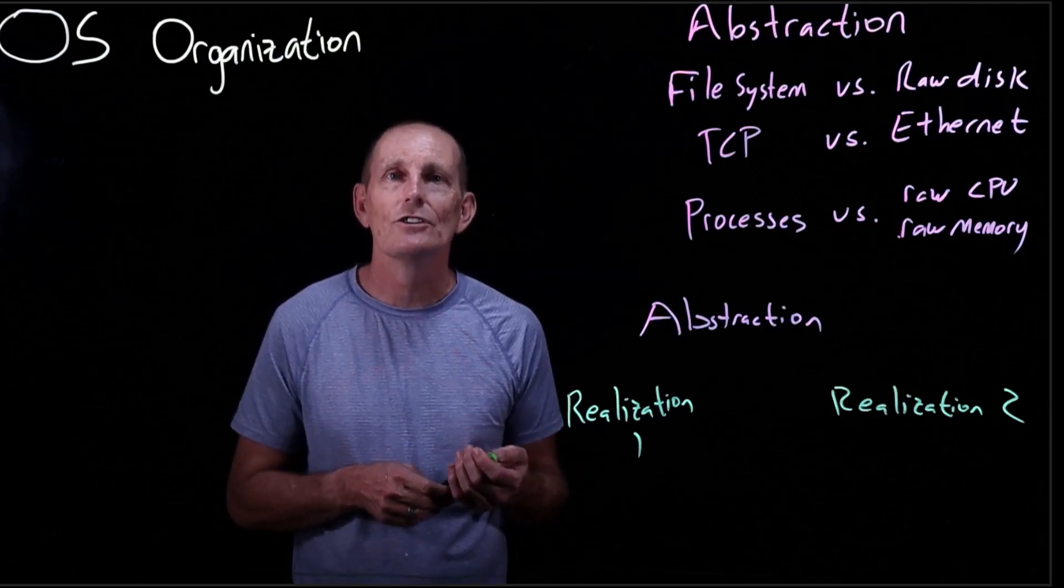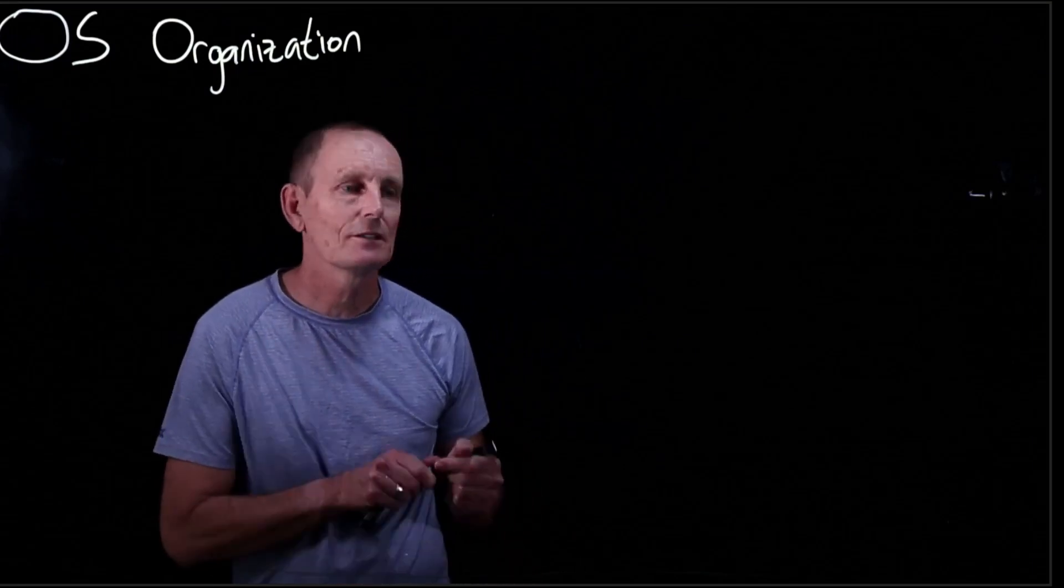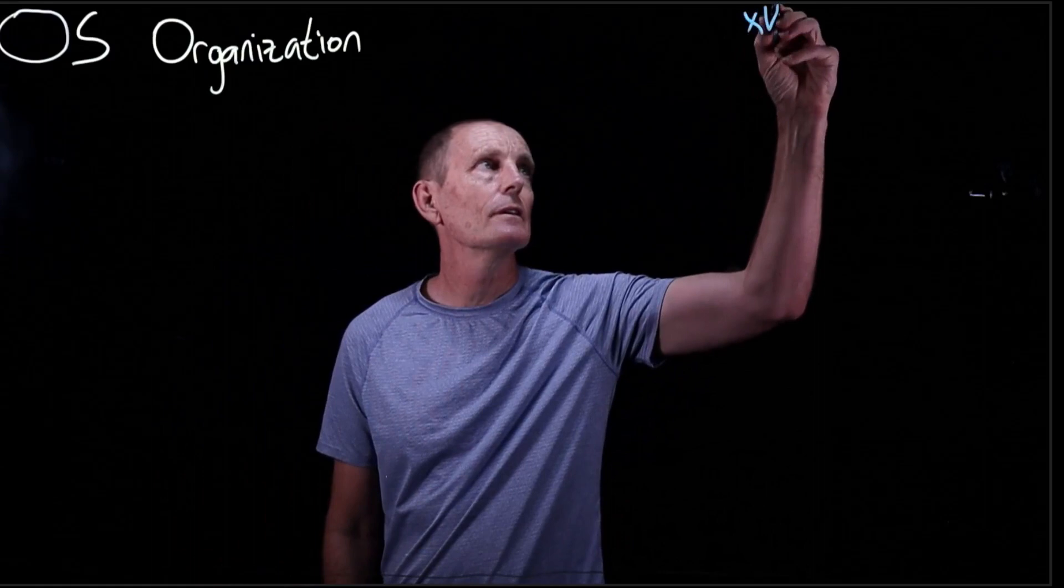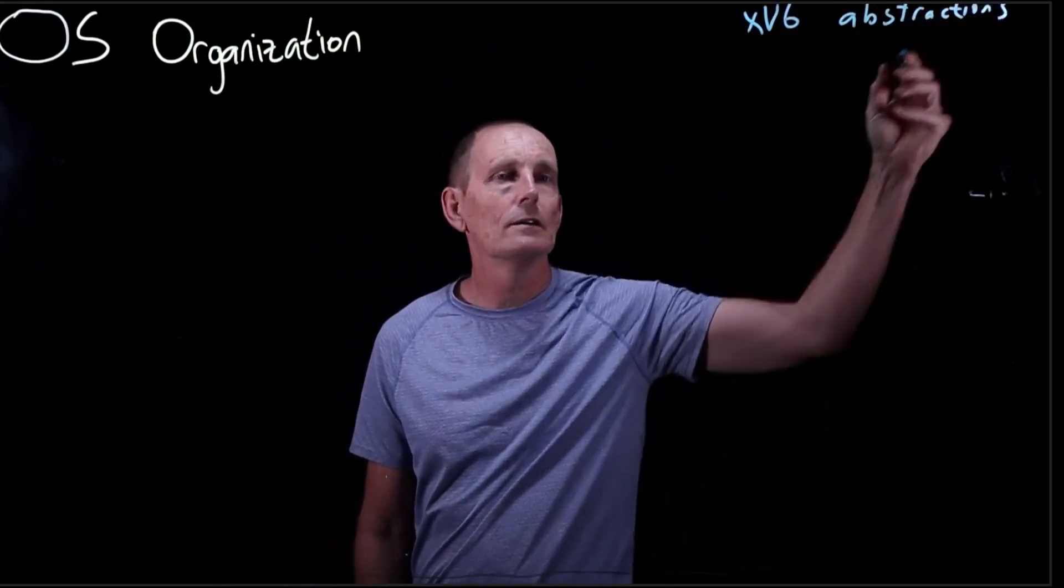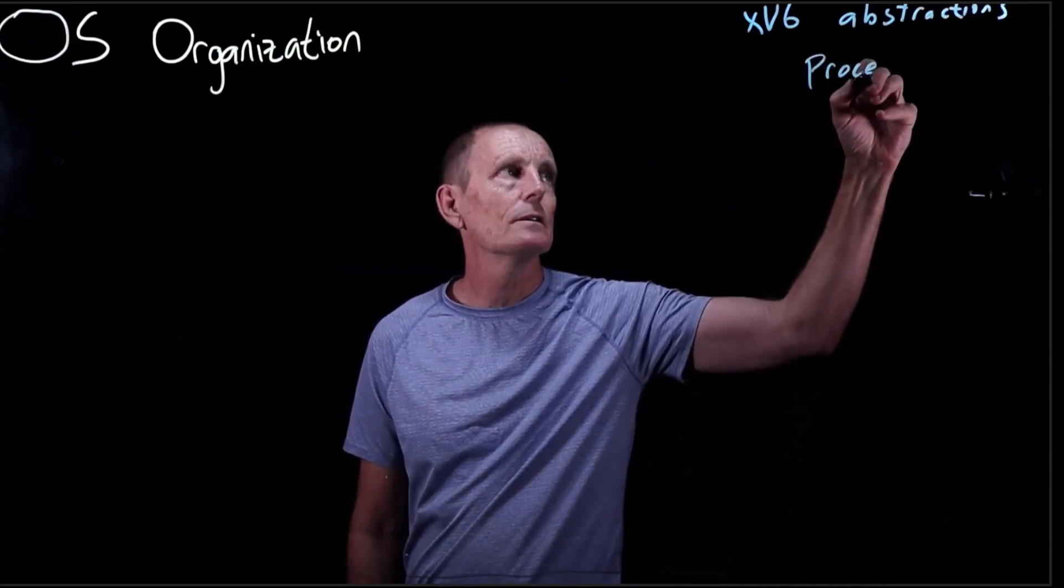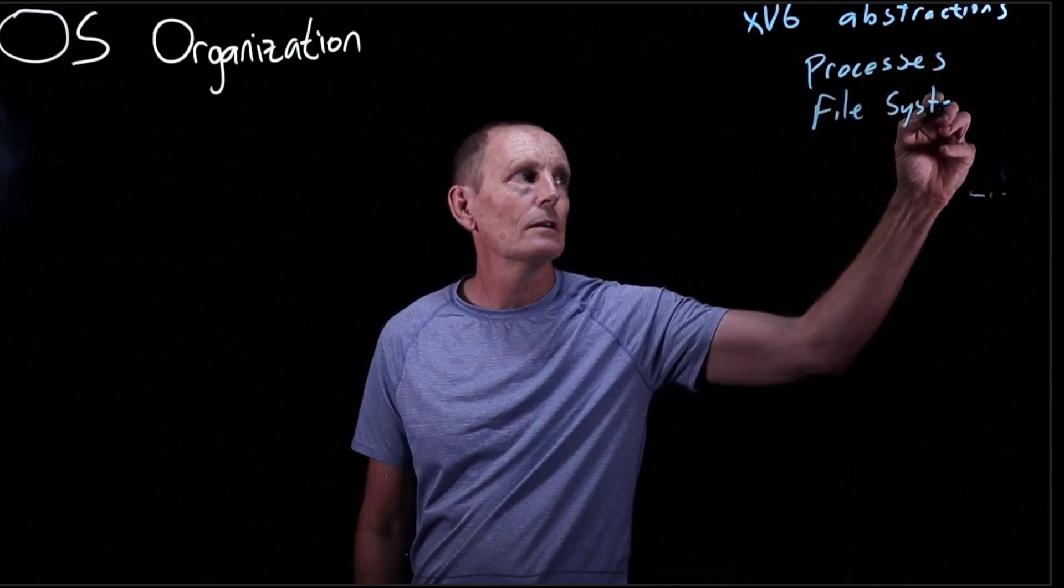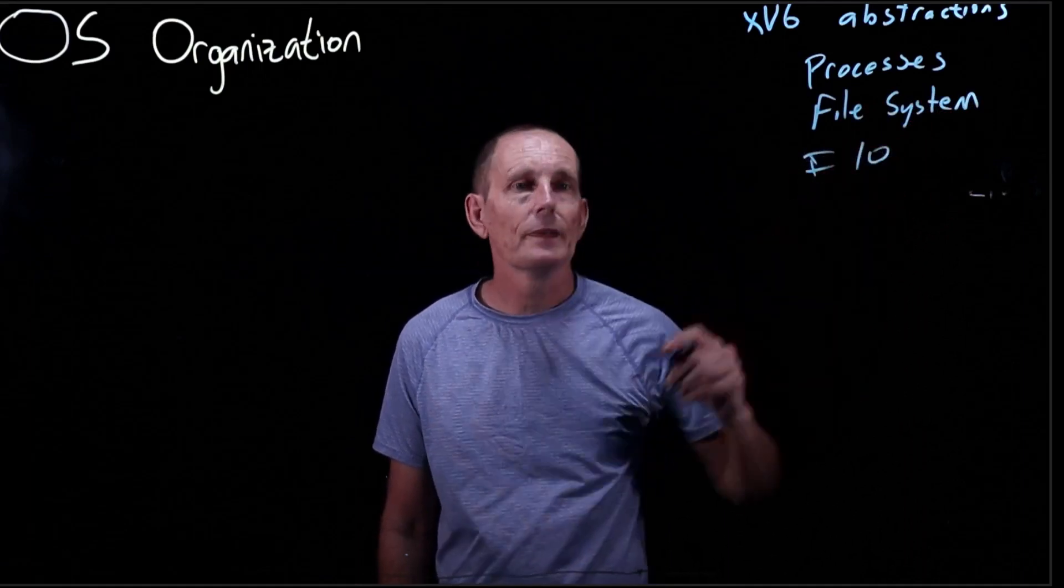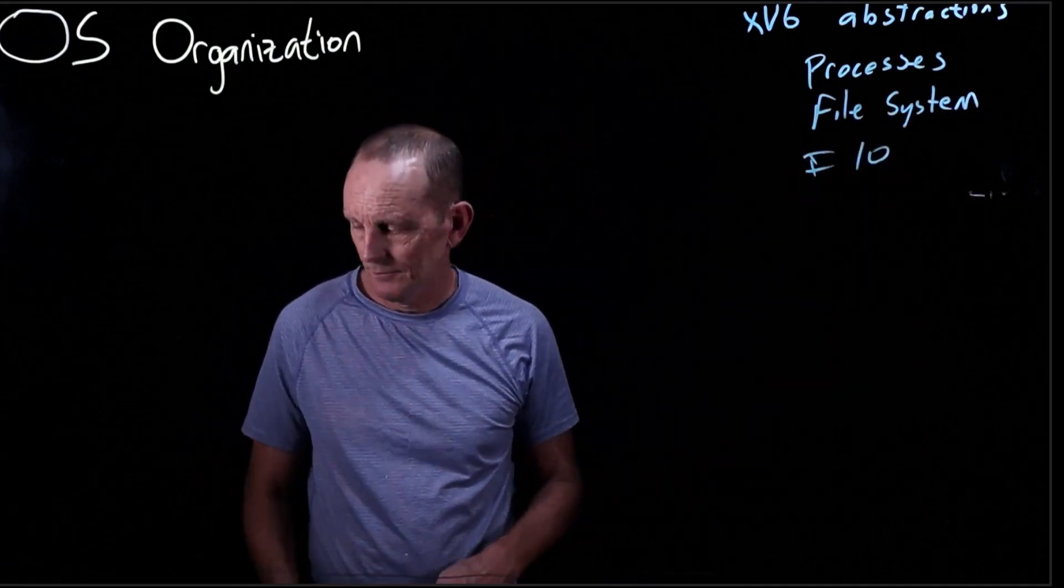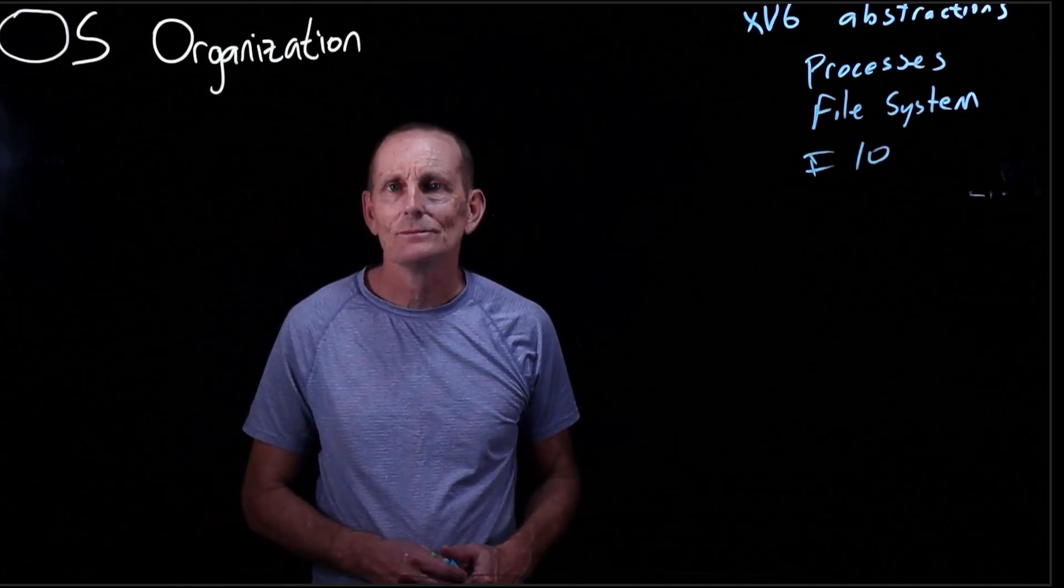xv6 doesn't have all that many abstractions. The major abstractions of xv6 are processes, file system, and I/O.